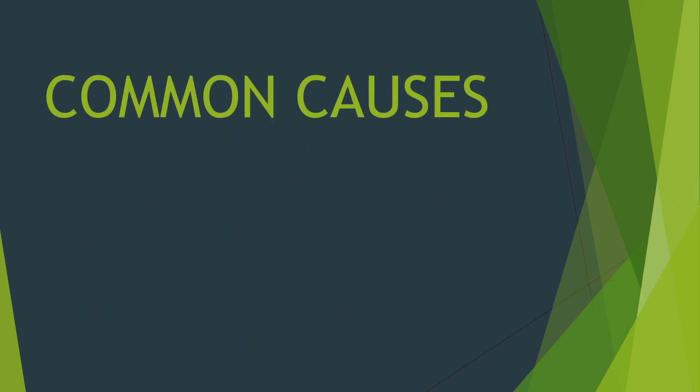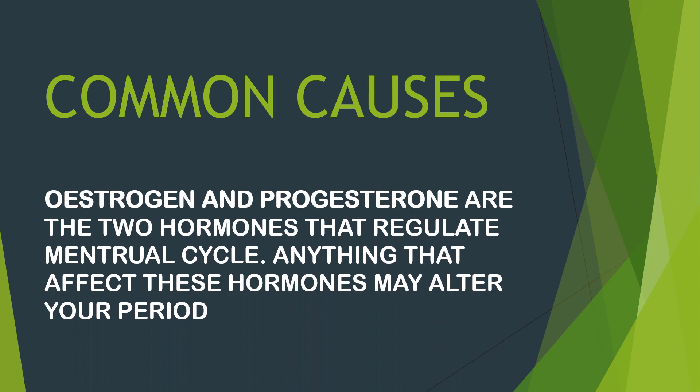Now, the common causes of irregular menstruation. Before we proceed, I want to mention that estrogen and progesterone are the two hormones that regulate the menstrual cycle. Anything that affects these hormones will ultimately alter your period.